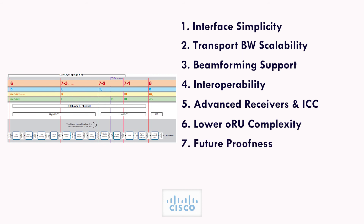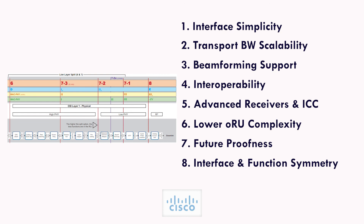Benefit 7 — Future Proofness: With the help of softwarization and virtualization, placing more functions at the ODU allows us to introduce new features via software upgrades without inflicting hardware changes at the ORU — which would not be possible if more hardware functions were pushed into the ORU. Benefit 8 — Interface and Function Symmetry: Using the same interface and split points for both uplink and downlink reduces the effort for creating, understanding and implementing technical specifications.